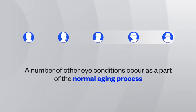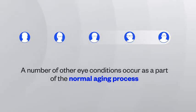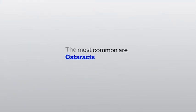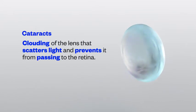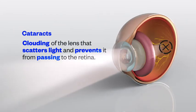While astigmatism is often present at birth, a number of other eye conditions occur as a part of the normal aging process. The most common are cataracts. Cataracts are a clouding of the lens that scatters light and prevents it from passing to the retina. Over time, it may continue to develop, preventing light from reaching the retina and making it harder to see.